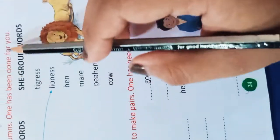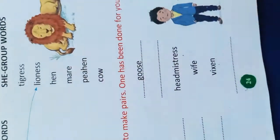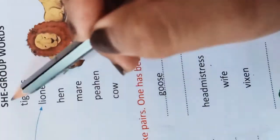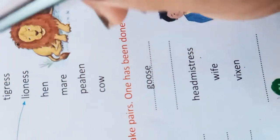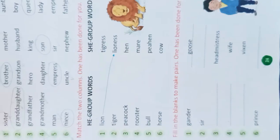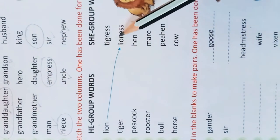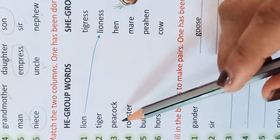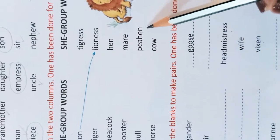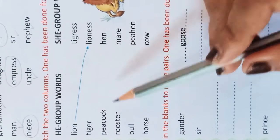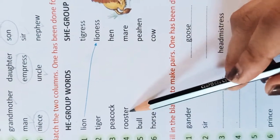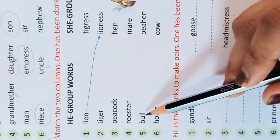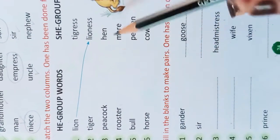It is very easy. Now you have to match the two columns — match the He group words with their corresponding She group words. Lion pairs with lioness, tiger with tigress, peacock with peahen, rooster with hen, bull with cow, and horse with mare.